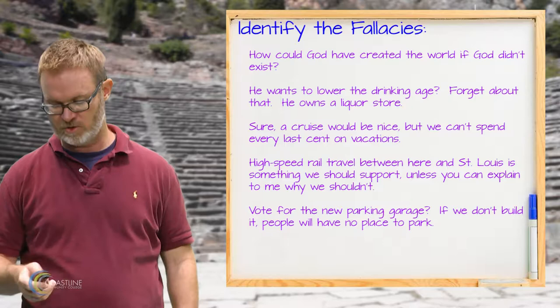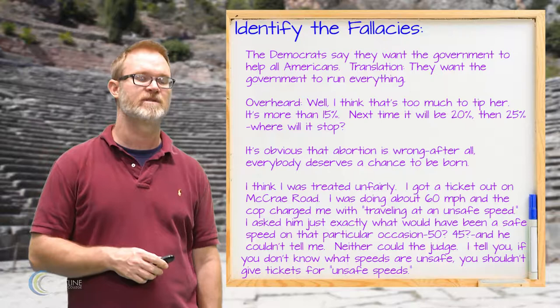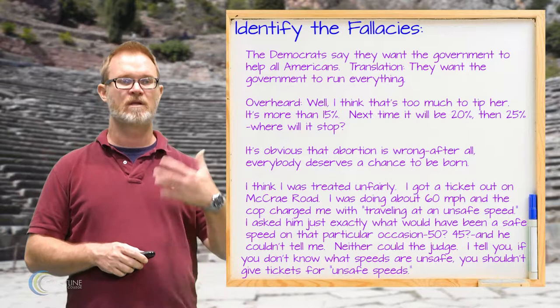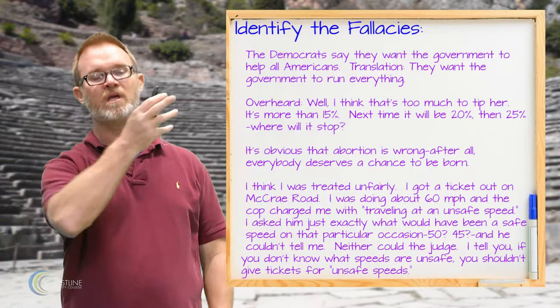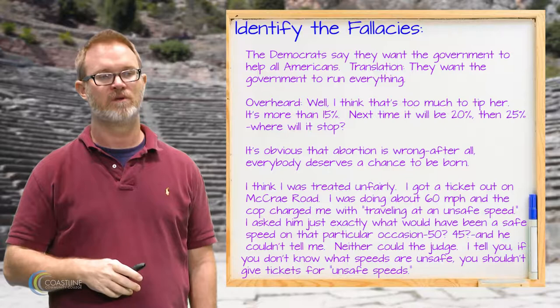The next one says: the Democrats say they want the government to help all Americans. Translation: they want the government to run everything. Here again is a straw man — we go from the Democrats helping Americans to running everything. That's clearly reconfiguring and misconstruing the position, what we call a straw man.